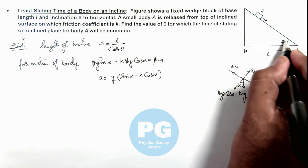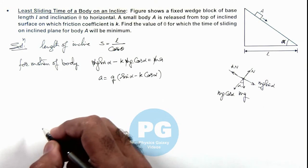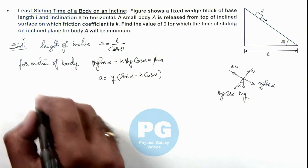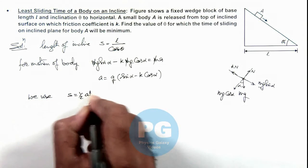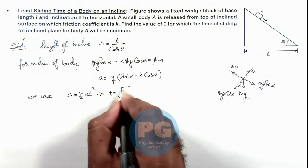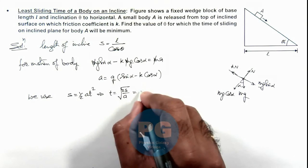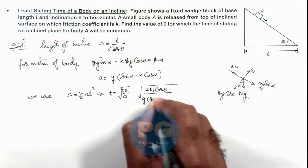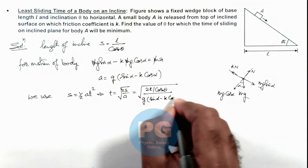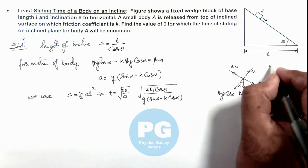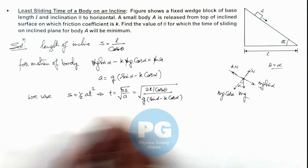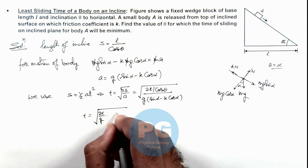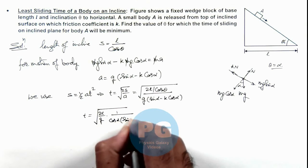The inclination angle is taken as alpha, so theta and alpha are the same here. Since the body travels distance s along the incline, we use s = ½·a·t², which gives t = √(2s/a). Substituting the values of s and a, this becomes t = √(2l / (cos(alpha) · g · (sin(alpha) − k·cos(alpha)))), which simplifies to t = √(2l/g · 1 / (cos(alpha) · (sin(alpha) − k·cos(alpha)))).